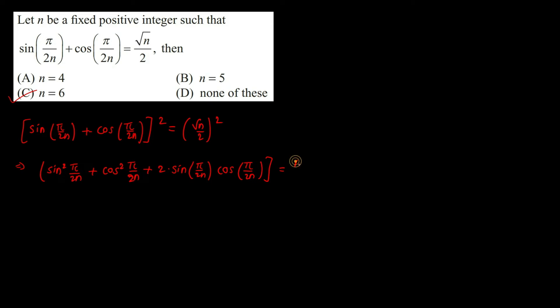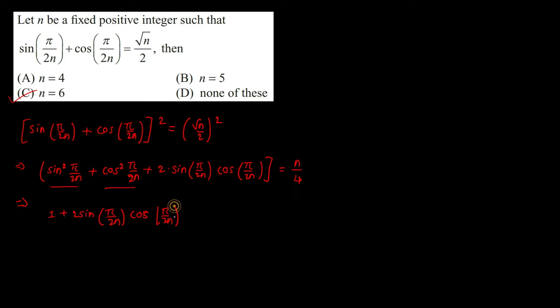When you square both sides using the identity (a+b)² = a² + 2ab + b², you get sin²(π/2n) + cos²(π/2n) plus a cross term. The sin² + cos² part equals 1, and you are left with 2·sin(π/2n)·cos(π/2n).